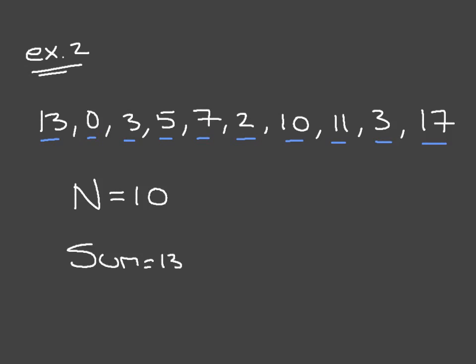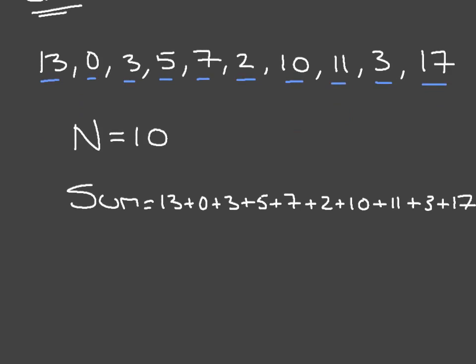So in this case, that would be 13 plus 0 plus 3 plus 5 plus 7 plus 2 plus 10 plus 11 plus 3 plus 17. Now, if needs be, you can go ahead with your calculator and check this. But we find that the sum is equal to 71.